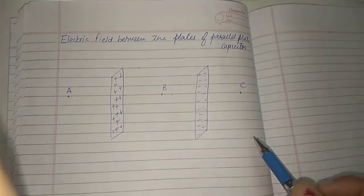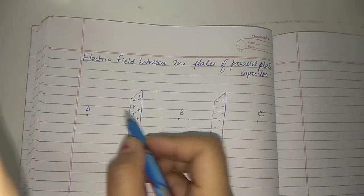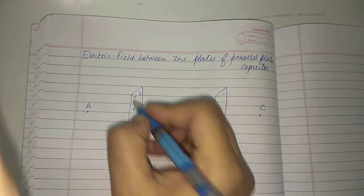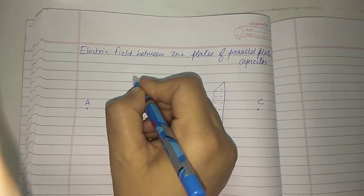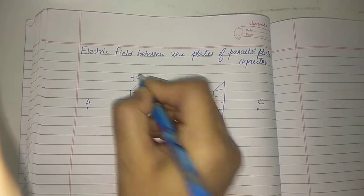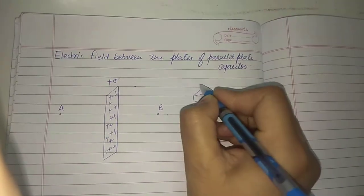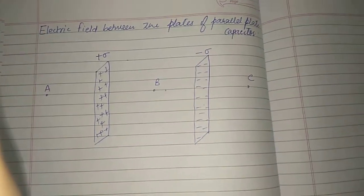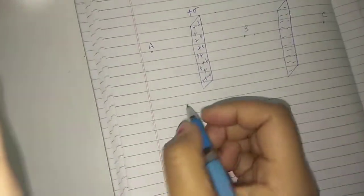Both plates have the same area, and equal and opposite charges are given to them. This plate has surface charge density Sigma and the other has surface charge density minus Sigma. Now let us find out the electric field at point A.